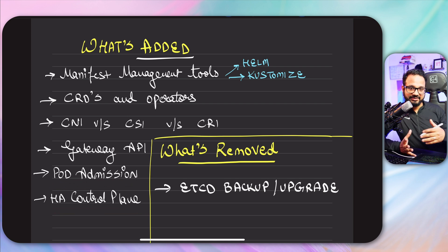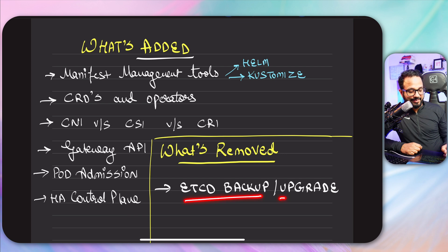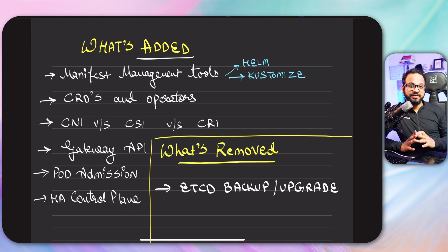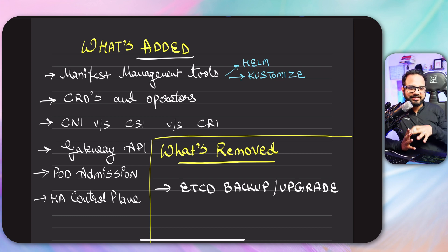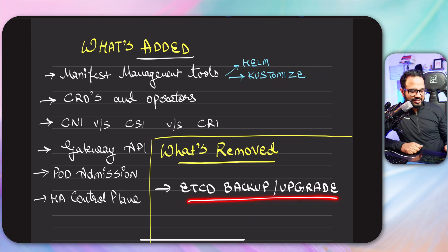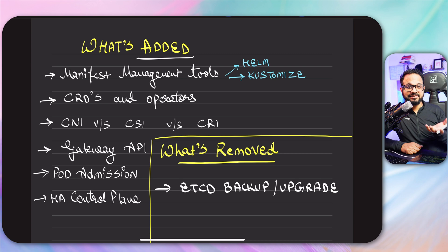So those are the topics that have been newly added. As for what's removed, they removed etcd backup and upgrade. That appears to be the only topic removed — the blog they published mentioned other removed topics, but I couldn't find them in the latest exam guide, so only this topic has been removed. This was already covered in my CKA series, so you are welcome to learn it if you haven't.